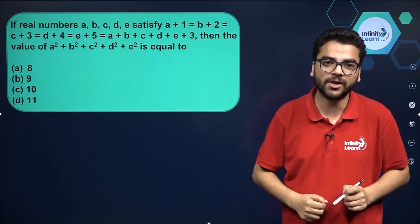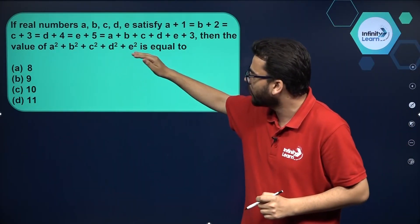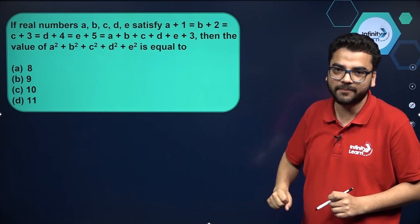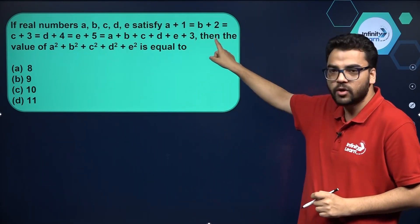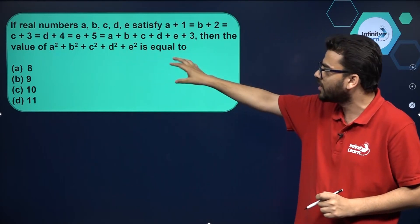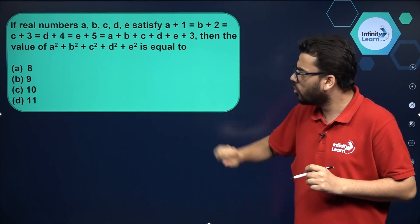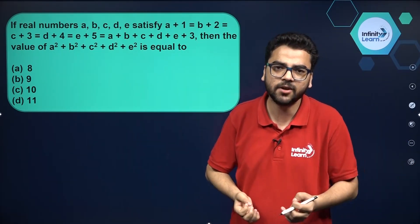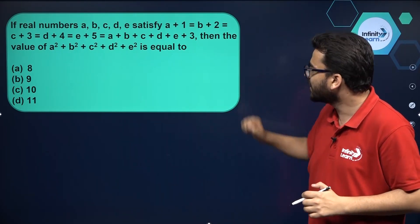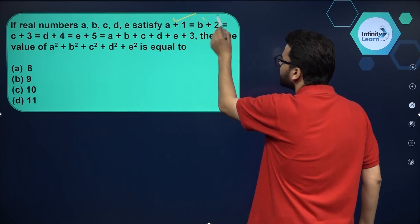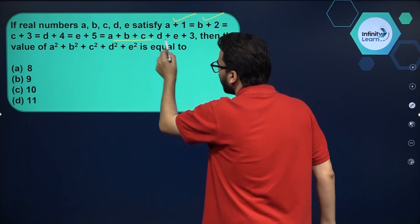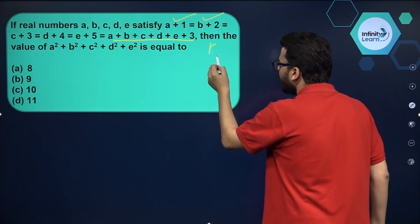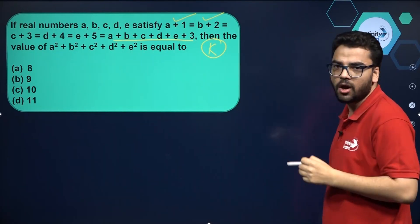We have to find the value of a² + b² + c² + d² + e². There are five variables, but a relation is given: a + 1 = b + 2 = c + 3 = d + 4 = e + 5. If you try to make many equations it will waste your time. Instead, we can do a simple assumption — all of these expressions are equal, so can we assume all of them to be equal to k?